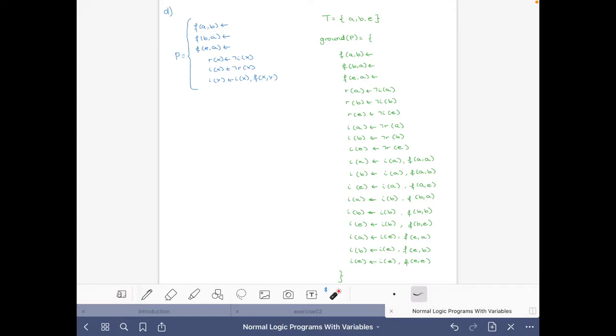Let's do now part D of the exercise on normal logic program with variables. So here I have our program P, where I have written the atoms just using their initials and similarly with the constants of the program.